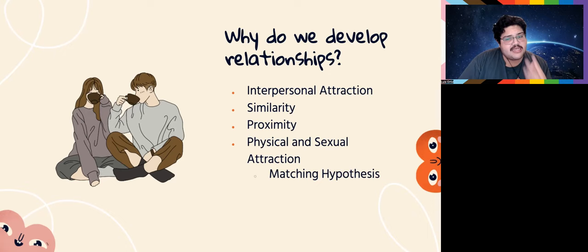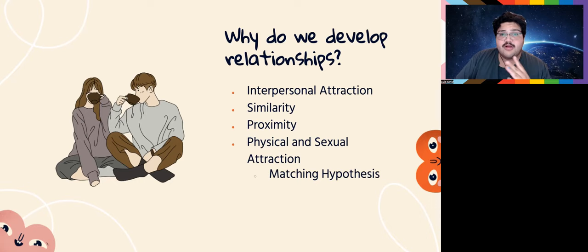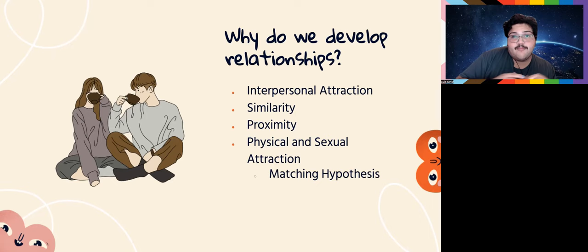There's also the matching hypothesis, which states that when we're looking for relationships, we usually hang out with people at our own attractiveness level. That's why you might think your friends are good-looking — they're just as attractive as you are. The hypothesis states you're generally going to be in relationships with people at the same attractiveness level as you.